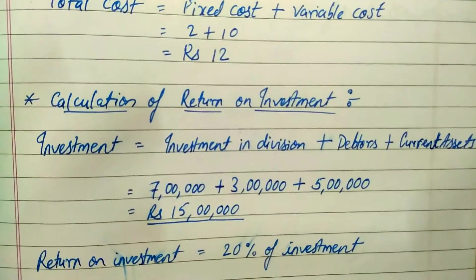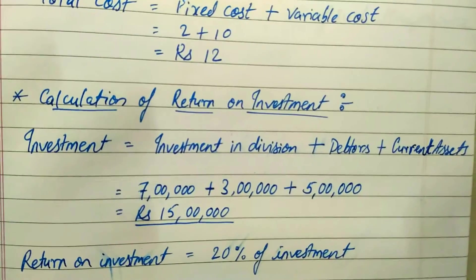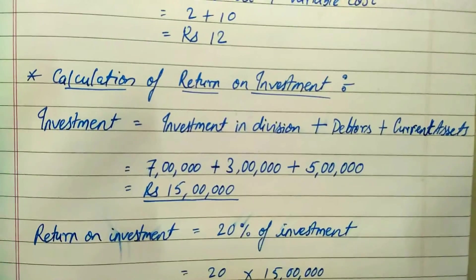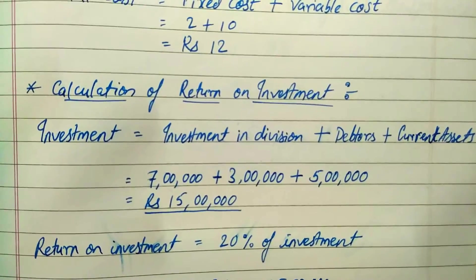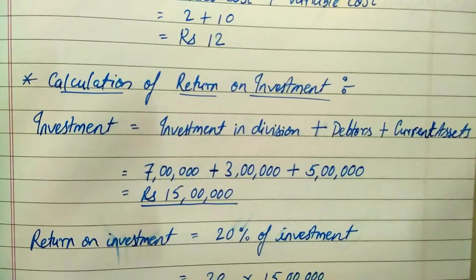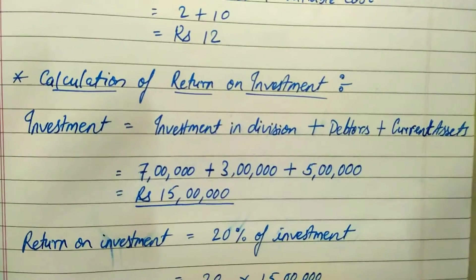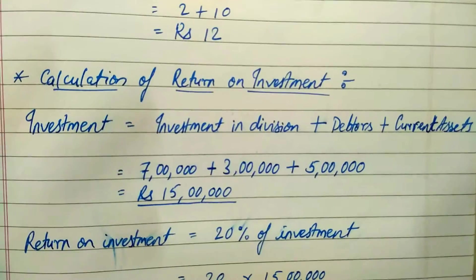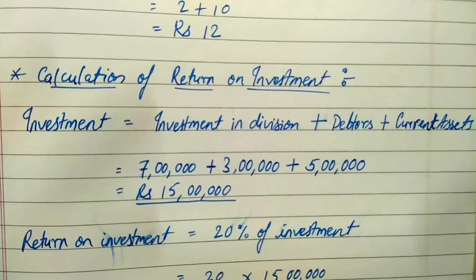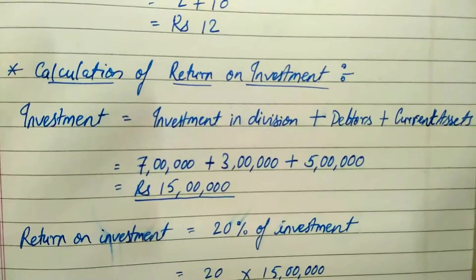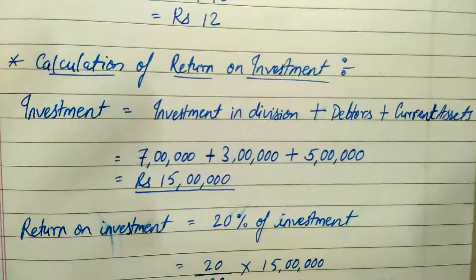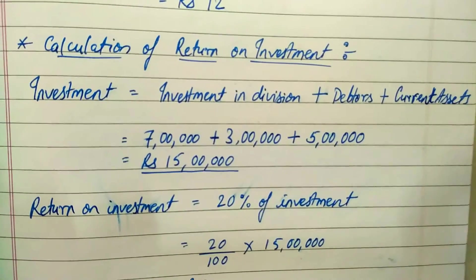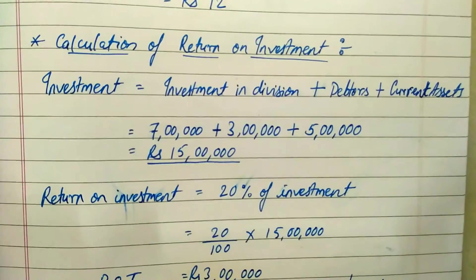Now let us calculate the return on investment. Before that, we need to know the total value of investment. Out of the given budget, the items under investment are: investment in division at seven lakhs, debtors at three lakhs, and other current assets at five lakhs. Seven plus three plus five gives a total investment of 15 lakh rupees.